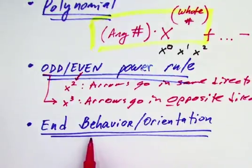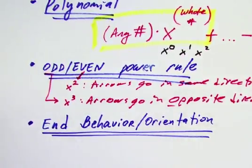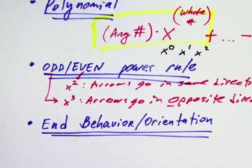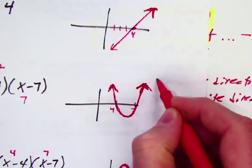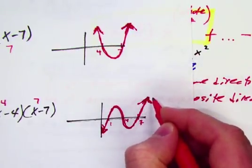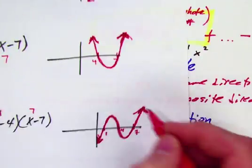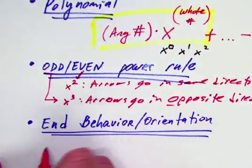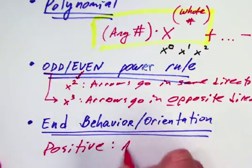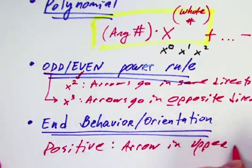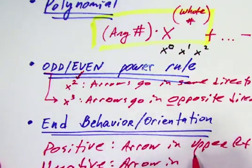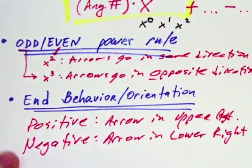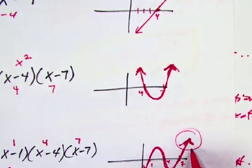The last key term is end behavior, also called orientation — how the graph is oriented on the paper. The last arrow is the most important because it decides where your graph heads. Most graphs want to end in the upper right-hand corner. So if the leading coefficient is positive, the arrow ends in the upper right. If it's negative, the arrow ends in the lower right. We're always talking about where the graph goes on the right side.